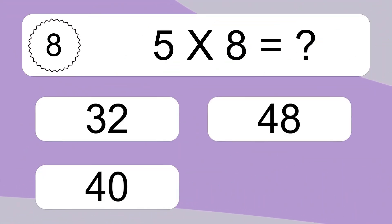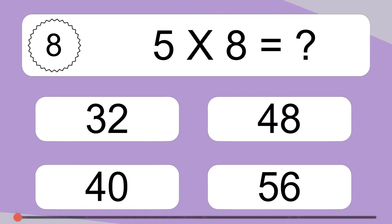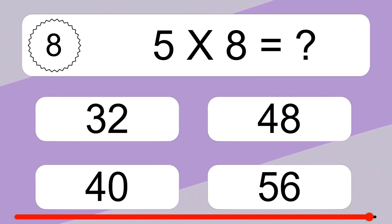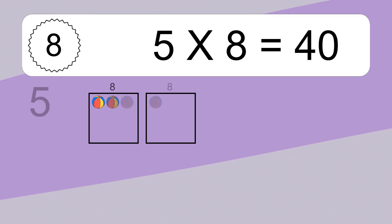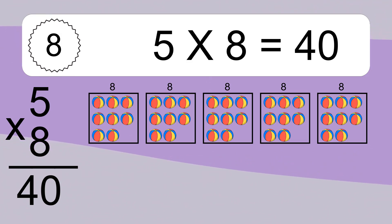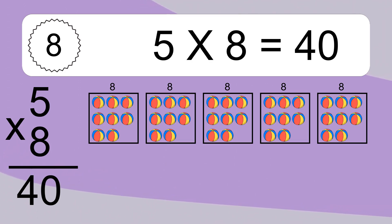5 times 8 equals what? 5 times 8 equals 40. We have 5 boxes, and each box has 8 colorful balls inside. If you count all the balls in all the boxes together, you will have 5 times 8 balls. This equals 40 balls.